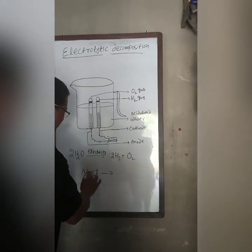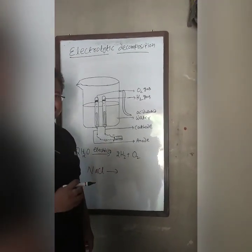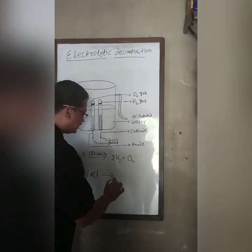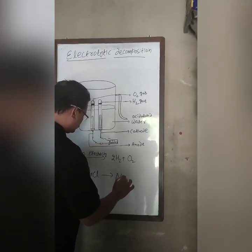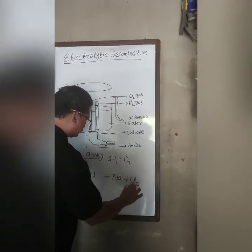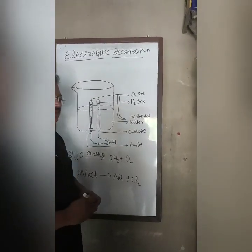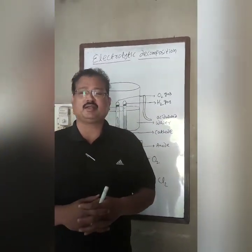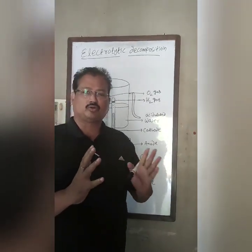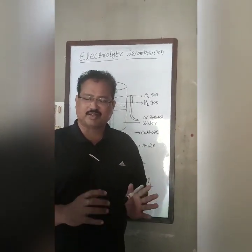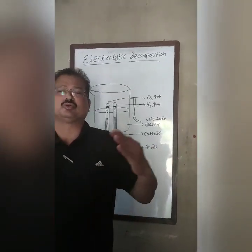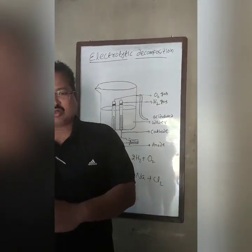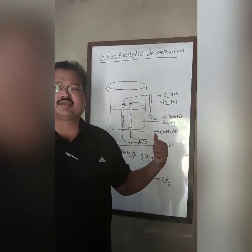When molten or fused sodium chloride is electrolyzed at high temperature, it decomposes into sodium and chlorine. In the fused state, the sodium ions and chloride ions are separated — sodium ions travel towards the cathode and chloride ions travel towards the anode, where they are collected at their respective electrodes.